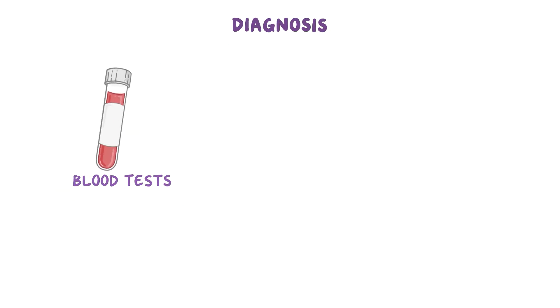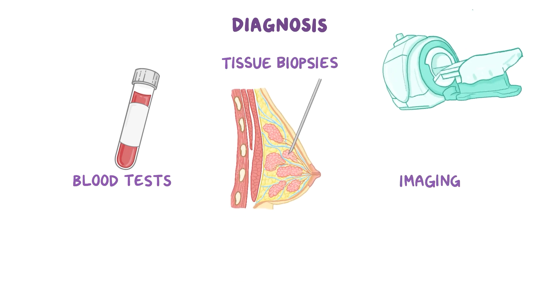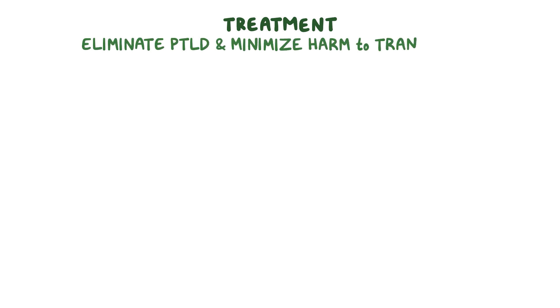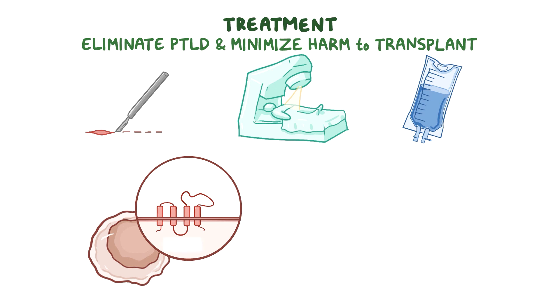Diagnosis of PTLDs may include blood tests, tissue biopsies to determine what type of cancer is present, and imaging such as a PET or CT scan to help determine whether the cancer has spread to other sites in the body. Treatment aims to eliminate the PTLD while minimizing harm to the transplant and may include surgery, radiation therapy, and chemotherapy. If the cancer is caused by B-cells that produce the surface protein CD20, a manufactured antibody called rituximab may be used.